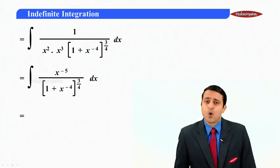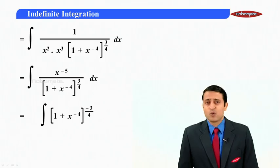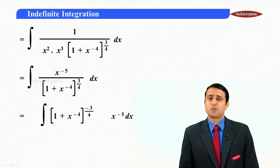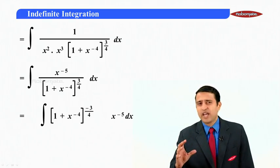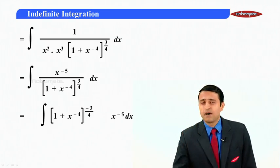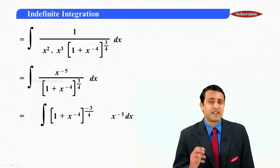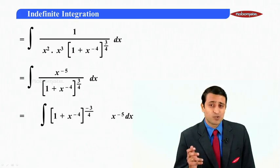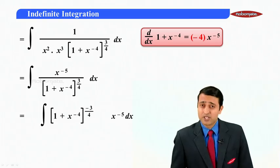So we will get x raise to minus 5 upon 1 plus x raise to minus 4 raise to 3 by 4 dx. Can I rewrite this as 1 plus x raise to minus 4 raise to minus 3 by 4 into x raise to minus 5 dx. Now as a student I should understand now we have some function raised to some radical power 3 by 4. We should adjust its derivative. So we should substitute.